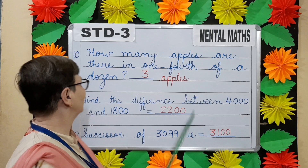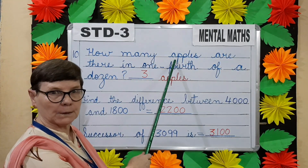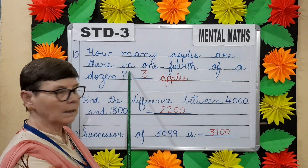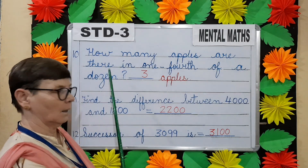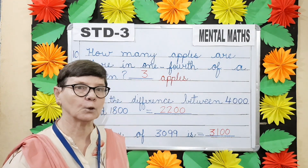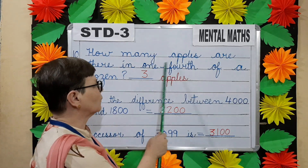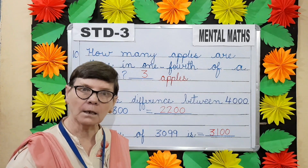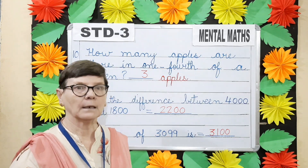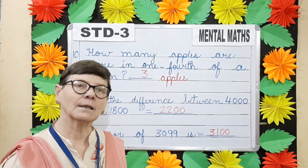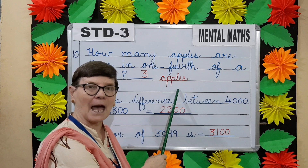Question number ten. How many apples are there in one-fourth of a dozen? One dozen has how many units children? Twelve. One-fourth means one by four. Say the four times table till you come to twelve — four threes are twelve. So we get three apples.